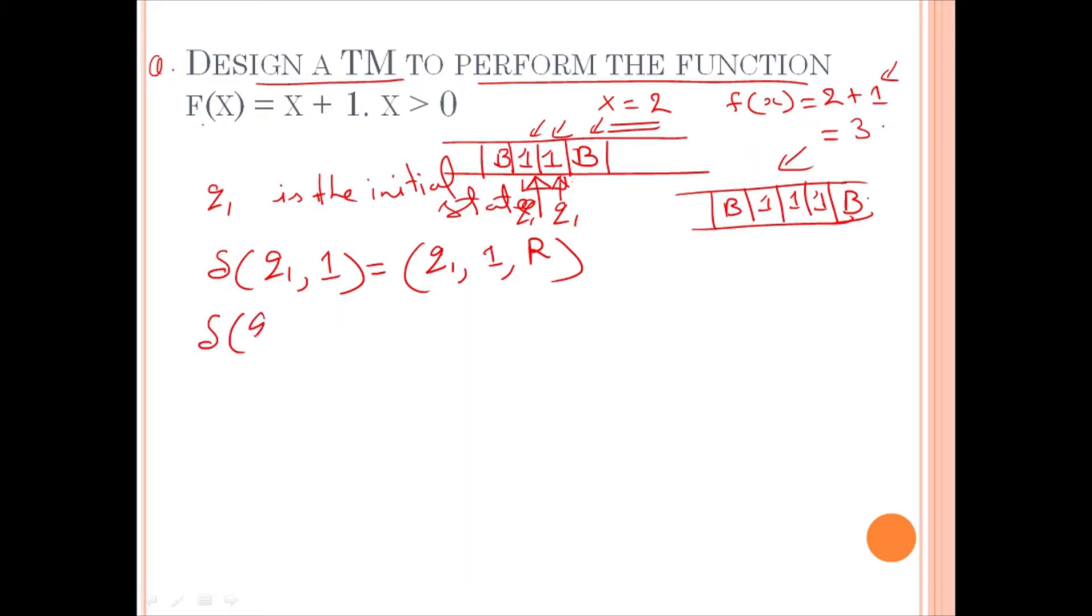So, delta q1, b is equal to q2. So, you are encountering for the first time the blank symbol. So, a state is being changed. Now, remember, you have to change that blank symbol into 1 to increase the value by 1.